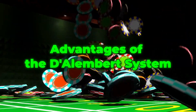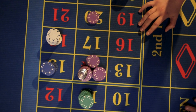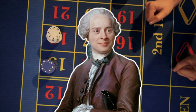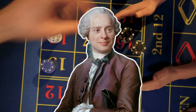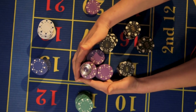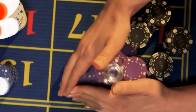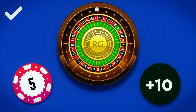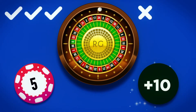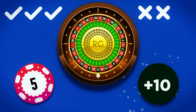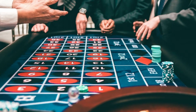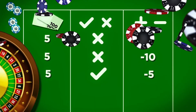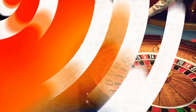Like any roulette strategy, the Dolanbert approach offers both potential benefits and drawbacks. Let's delve into its advantages. Simplicity: the system's straightforward mechanics make it easy to understand and implement, even for novice players. No complex calculations or advanced mathematical knowledge is required.